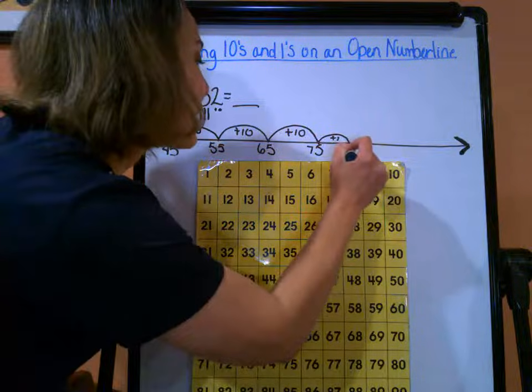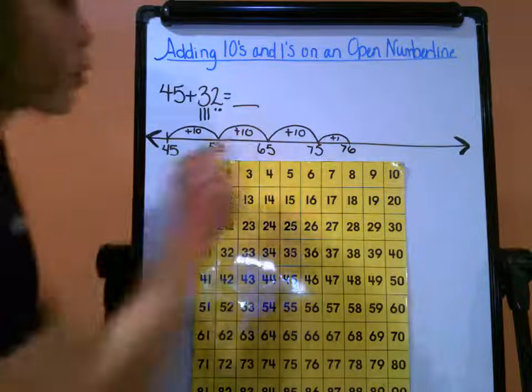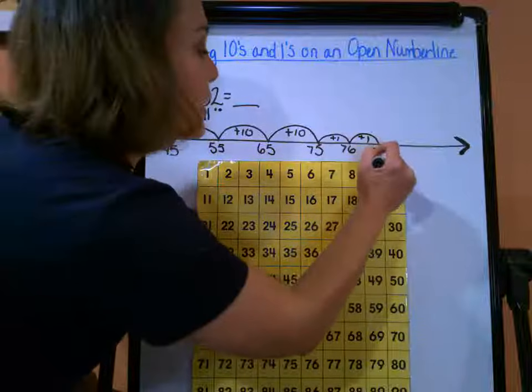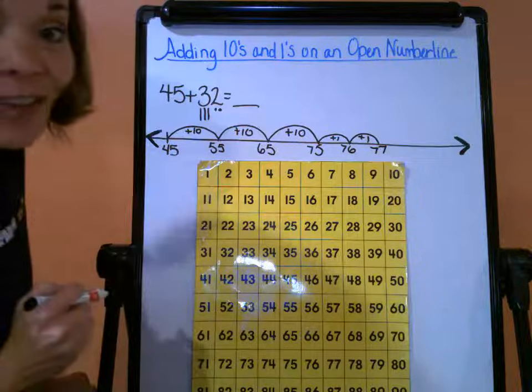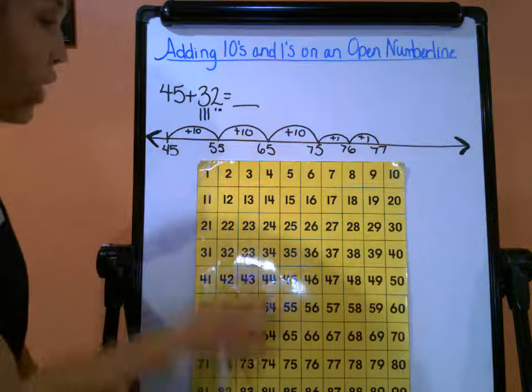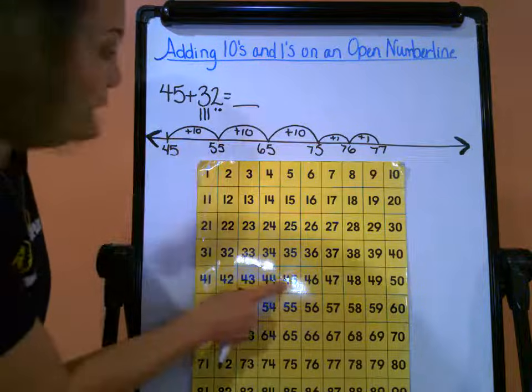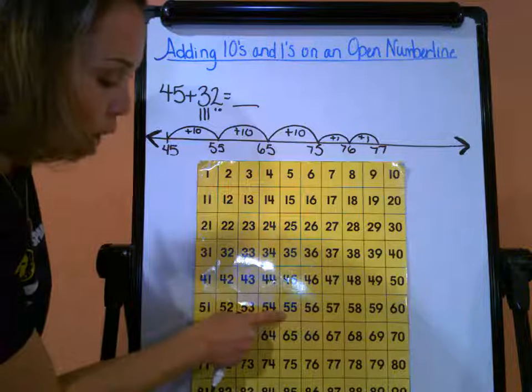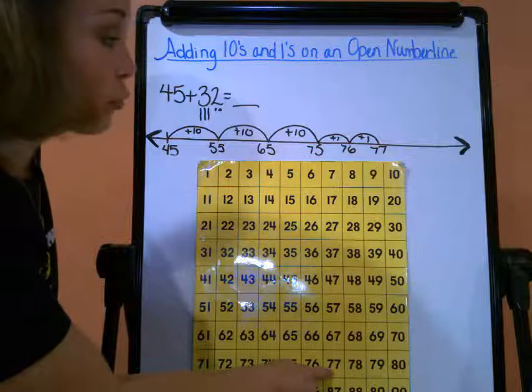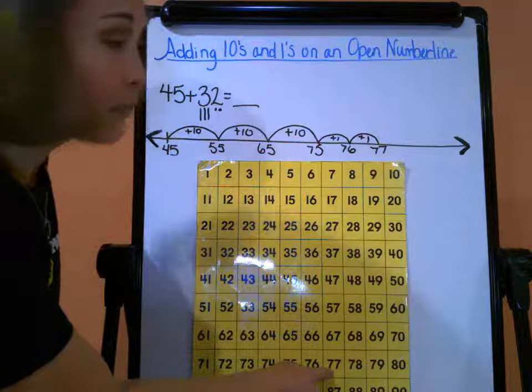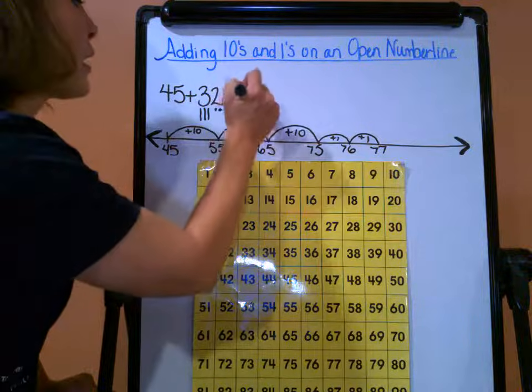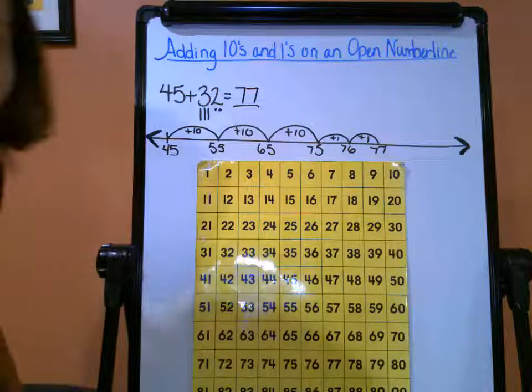And then one more after that, because I only have one more additional one, is 77. So let's go ahead, let's look at our chart too and we'll double check. So 45, and I want to go three tens: one, two, three, and then two additional ones: one, two. So therefore, yep, I did make it to that 77. It's shown here on my open number line. So 45 plus 32 is going to give me a sum of 77.